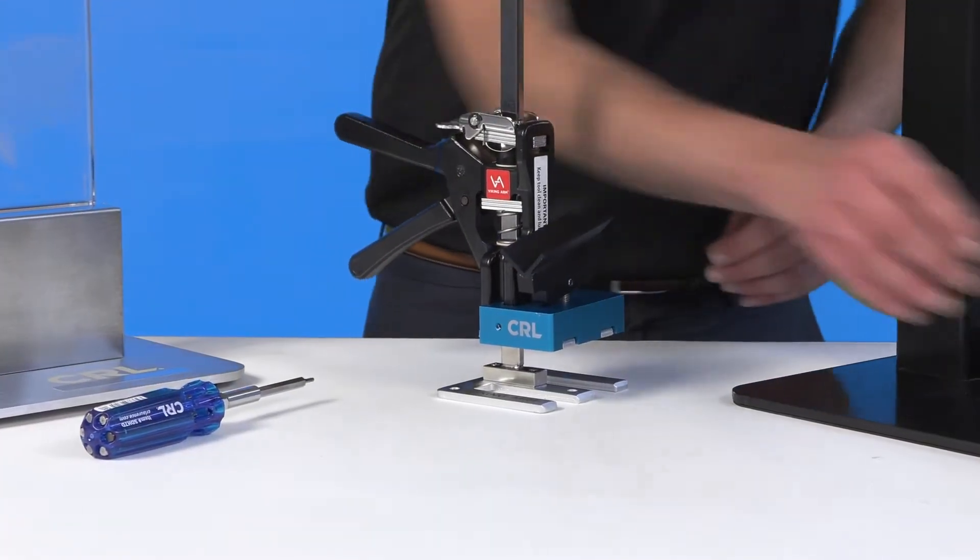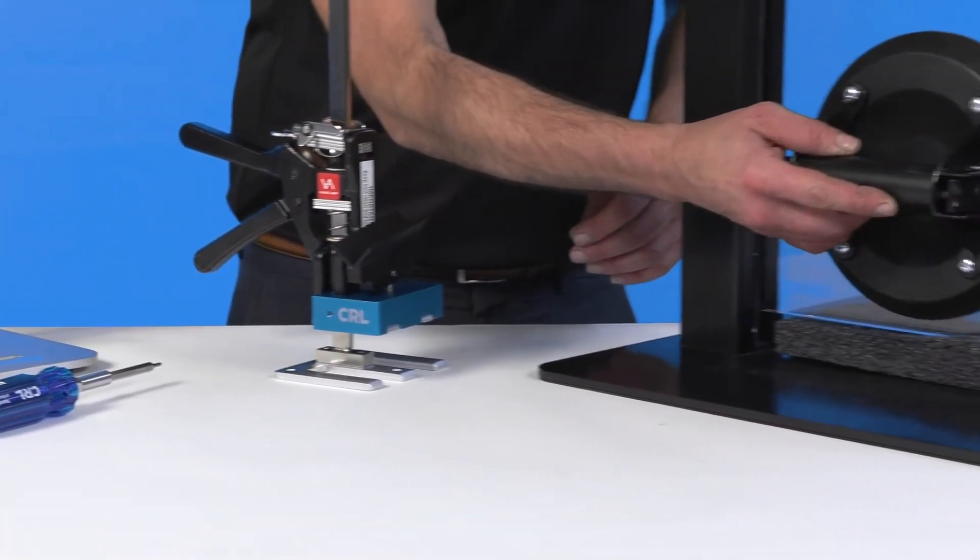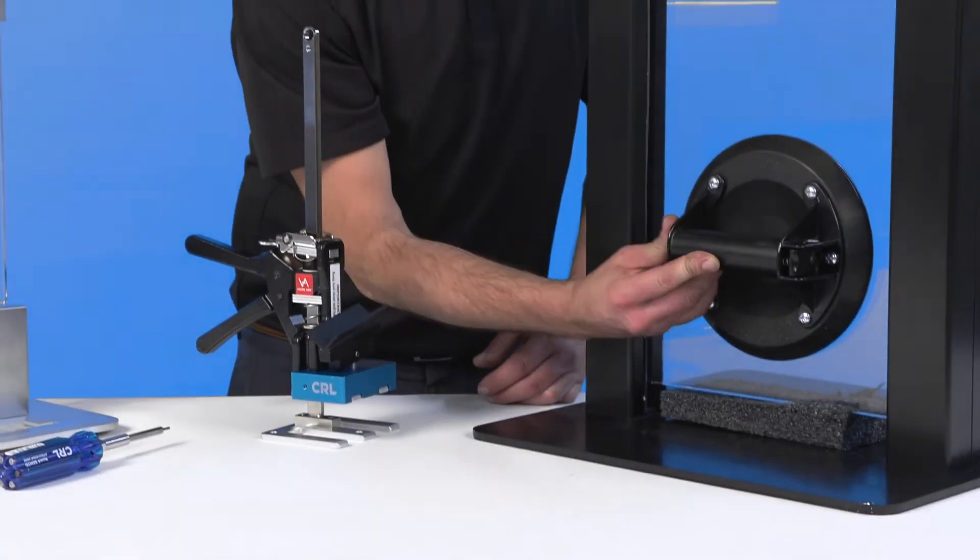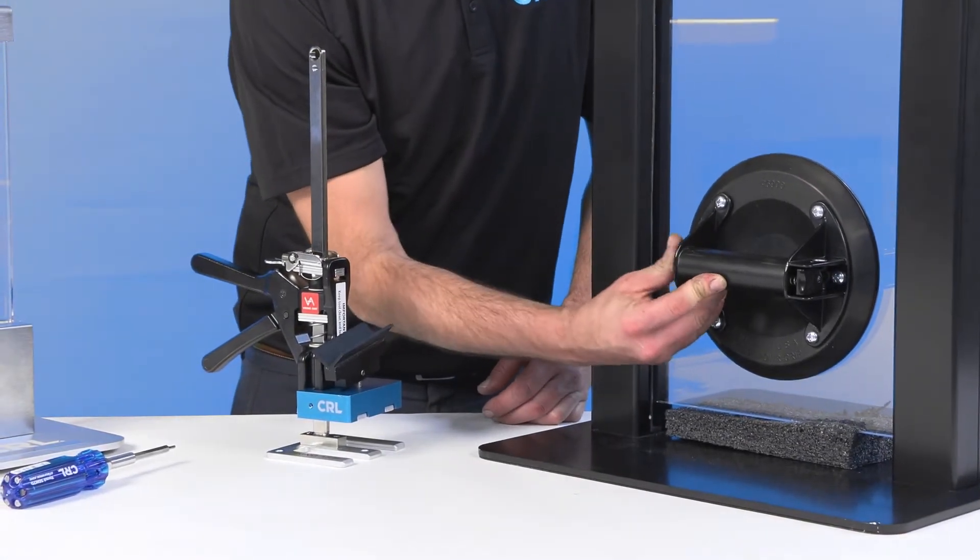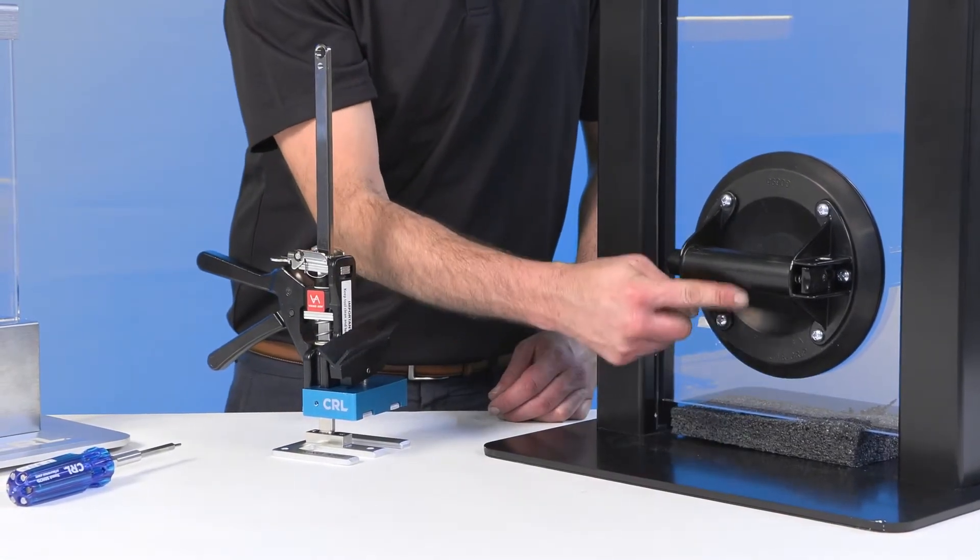Then take your suction cup. Place it on the glass. About 8 inches from the bottom should do.